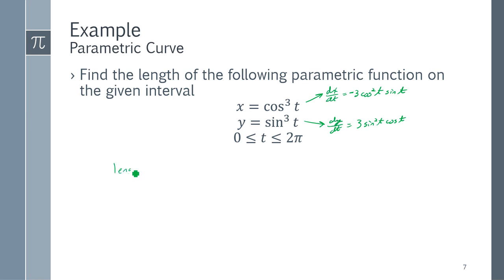So then my length is the integral. So t goes from 0 to 2π, the square root of dx/dt squared plus dy/dt all squared with respect to t.